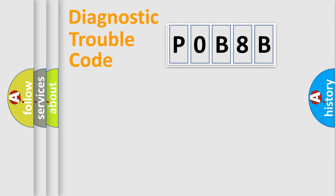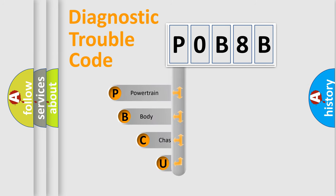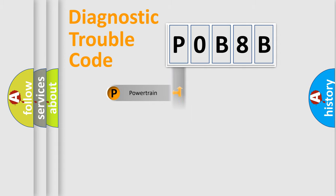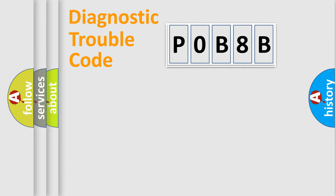First, let's look at the history of diagnostic fault code composition according to the OBD2 protocol, which is unified for all automakers since 2000. We divide the electric system of an automobile into four basic units: Powertrain, Body, Chassis, and Network. This distribution is defined in the first character of the code.